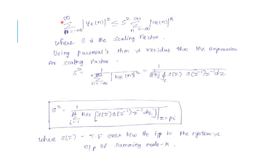Another approach is to scale the input, where s is the scaling factor. Using Parseval's theorem and the residue theorem, the expression for the scaling factor is: s squared equals 1 divided by the summation from n equals minus infinity to infinity of h_k(n) squared, which equals 1 divided by (1 over 2πj) times the closed integral of S(z) times S(z inverse) times z inverse dz.